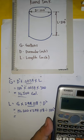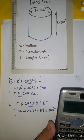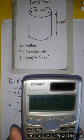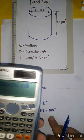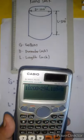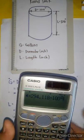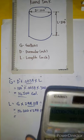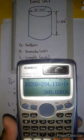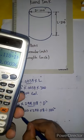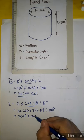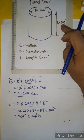So: 10,200 gallons times 294.118, divided by 100 squared. The answer is 300 inches — that is the length. This confirms our original length of 300 inches is exactly correct.